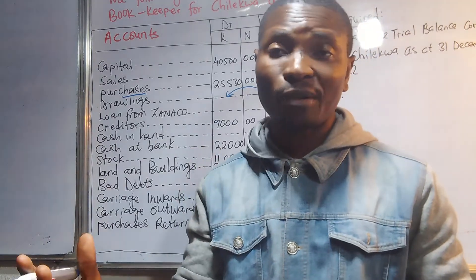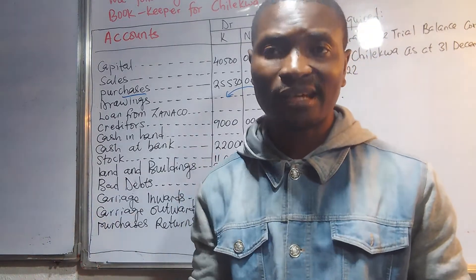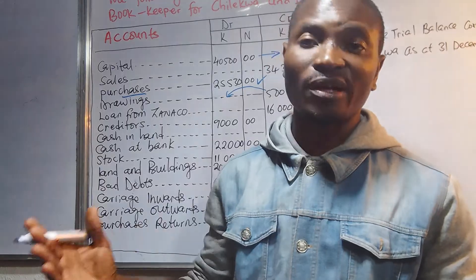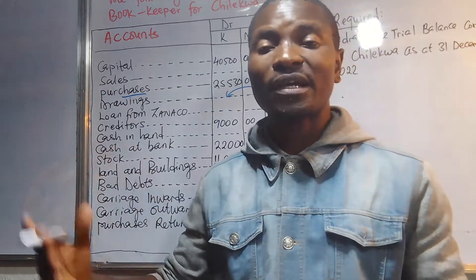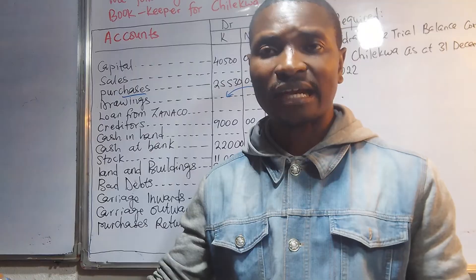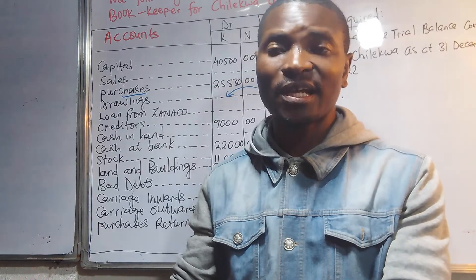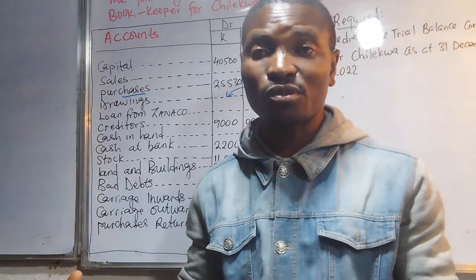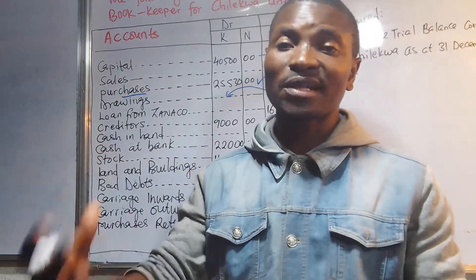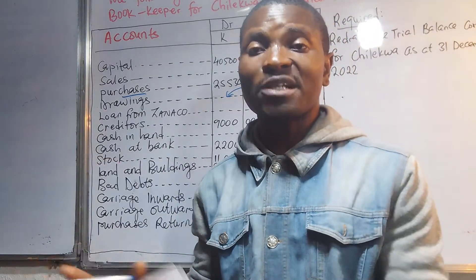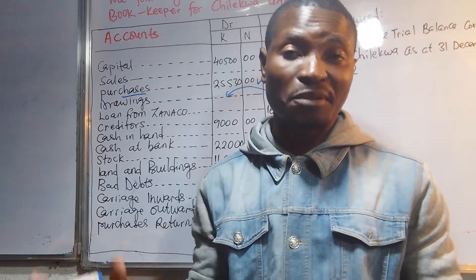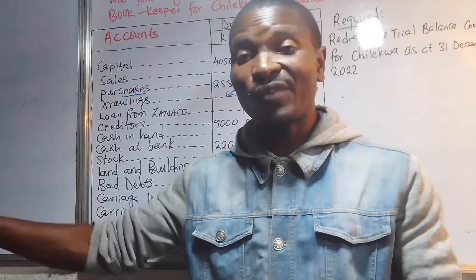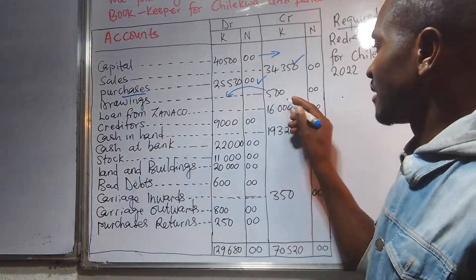The loan from Zanaco goes on the credit side because it does not belong to us — we must pay it back, perhaps over one or two years per the agreement. We service the loan through the profits we make; for example, maybe 10% of profits goes toward repaying it. This entry is correctly written.